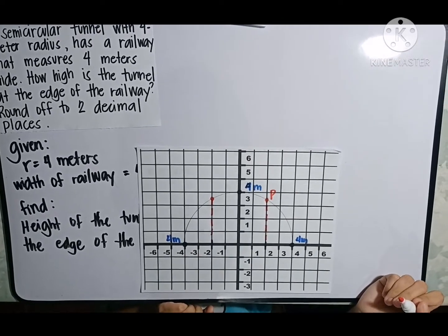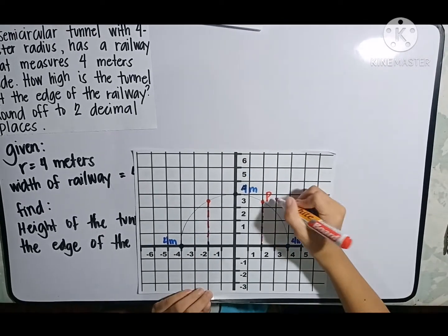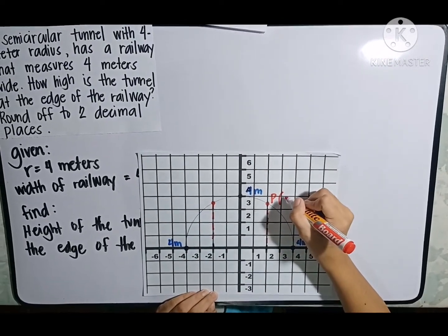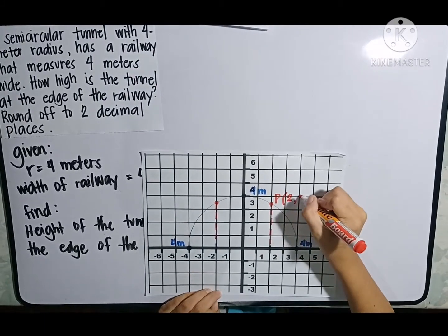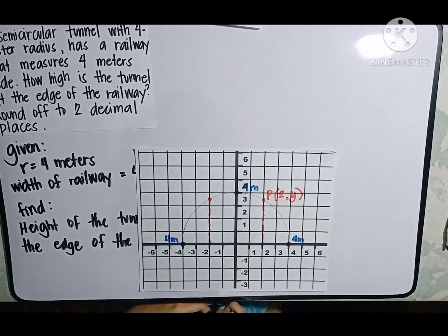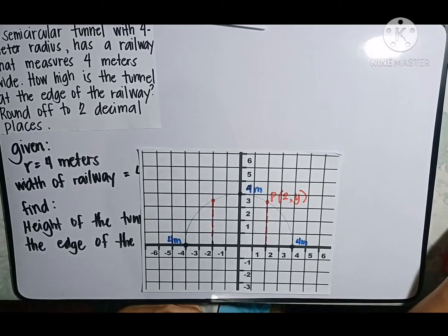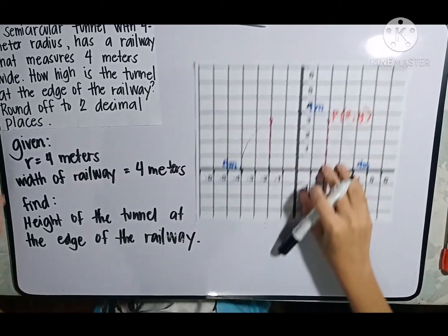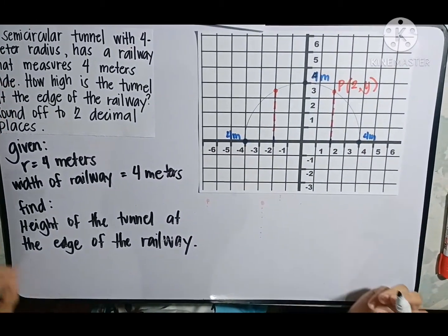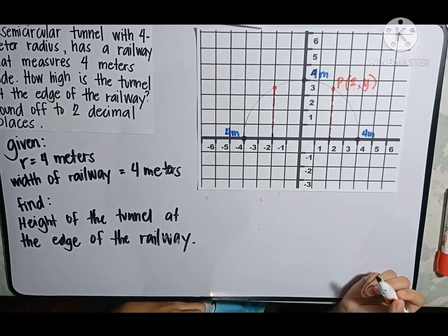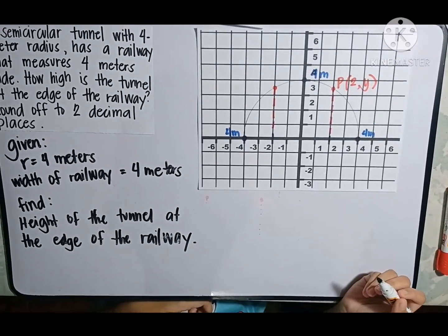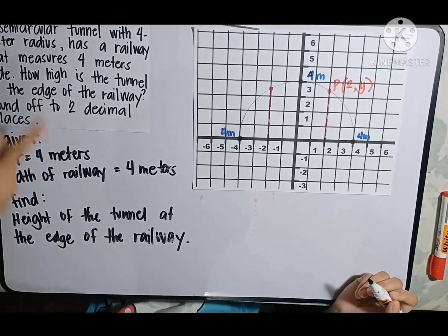From this, I can say that point P has coordinates of 2, y. From this problem, we can identify that the conic section is circle because of the semicircular tunnel.